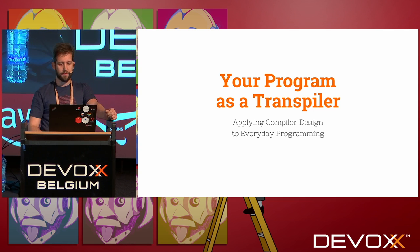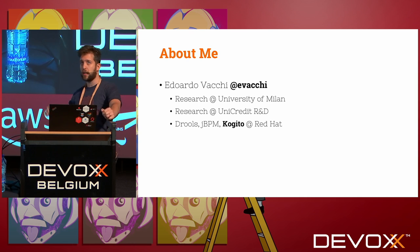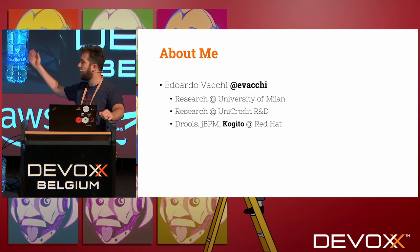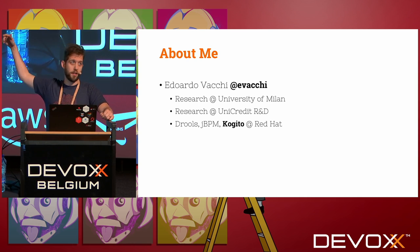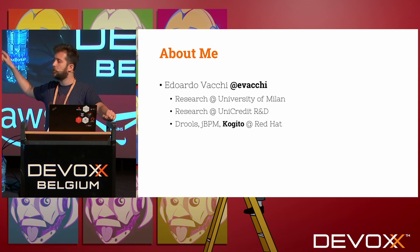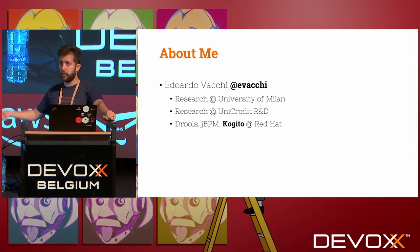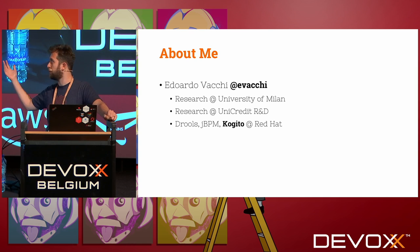A couple of words about me. My name is Eduardo Vacchi, my handle on Twitter and GitHub is Evacchi — spelled with C-C-H because I'm Italian, and we like to confuse people with our spelling.